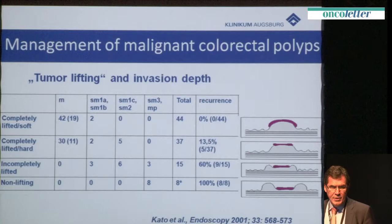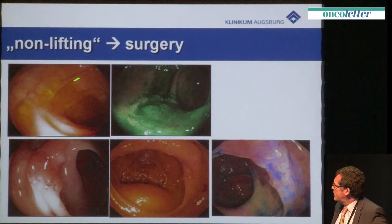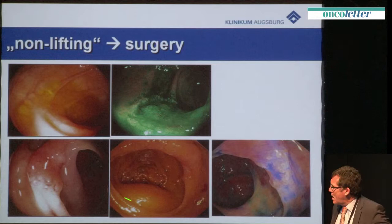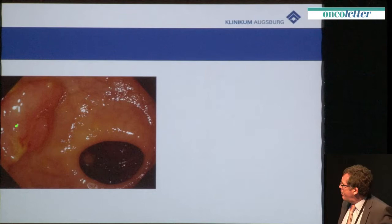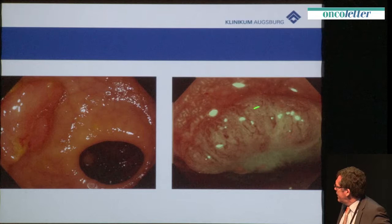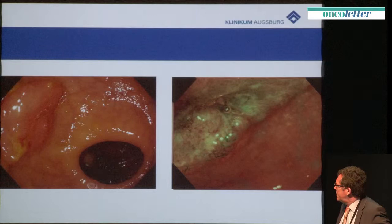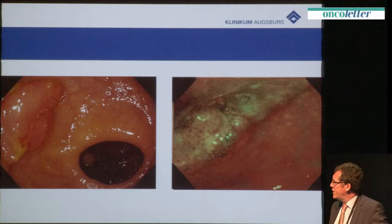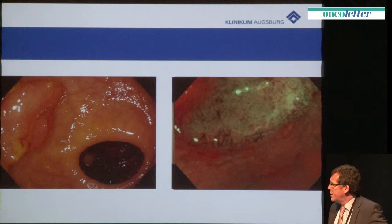Here are some examples. These lesions are not very large in diameter but all didn't have a nice lifting sign, so we recommended surgery. Another example of a polypoid lesion in the rectum: using new technologies like NBI or chromoendoscopy, you see dilated vessels and a non-structured pit pattern — a classical sign of deep submucosal infiltration. Therefore this lesion is also not an indication for local treatment and should be treated by surgery.